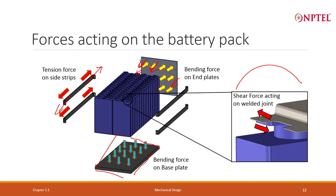One more thing: the shear force. When the bus bar is welded on the cell terminal, any movement during vehicle operation — which is a continuous process — will cause the bus bar to experience shear. So the dominant forces discussed are: side strip under tension, end plate under bending, base plate under bending, and bus bar under shear.